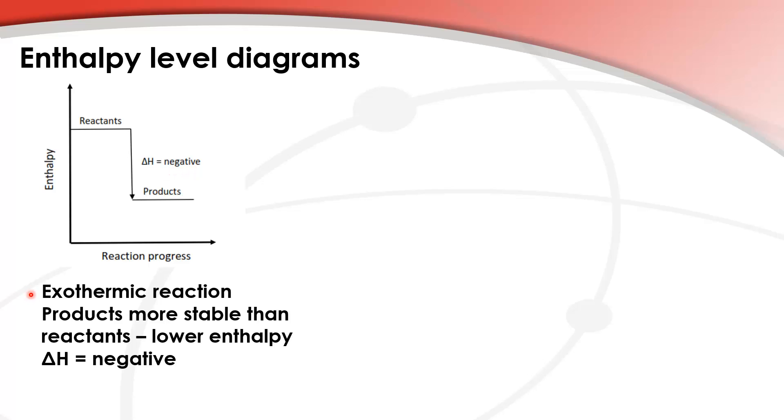So just to recap, we have an exothermic reaction. The products are more stable than reactants because they have a lower enthalpy, and delta H is negative.